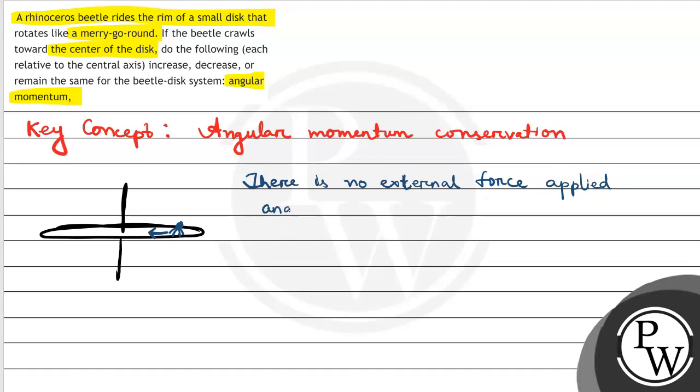If no external force is applied, then angular momentum is conserved. Angular momentum is conserved, which means I times omega is constant. That means L equals constant.